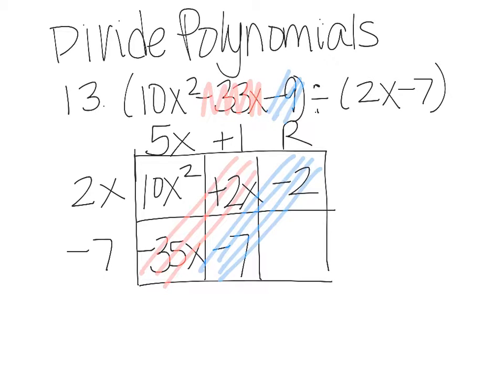So that negative 7 and negative 2 makes that negative 9. So I'm done and I can write my answer. 5x plus 1.